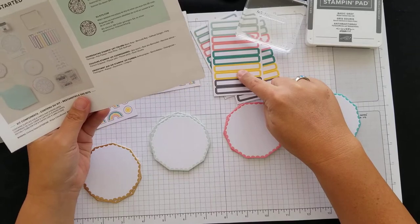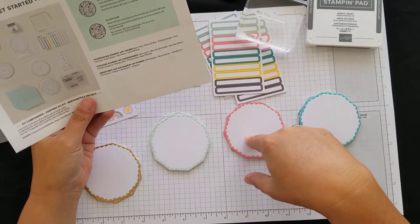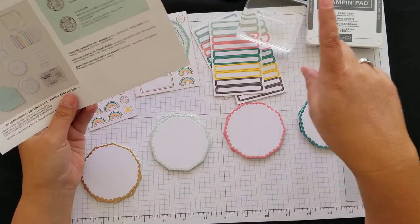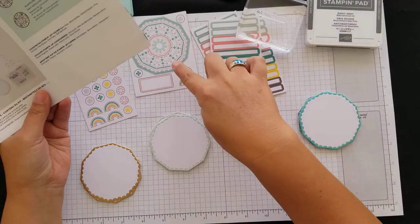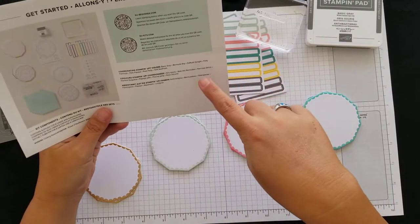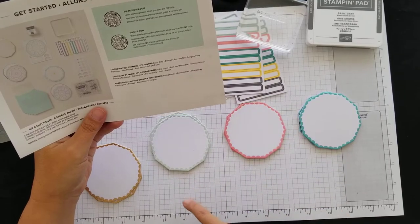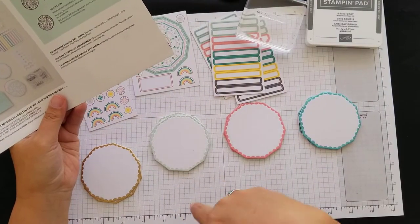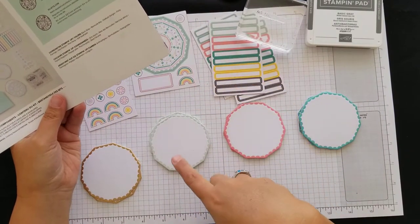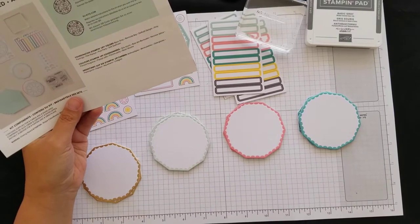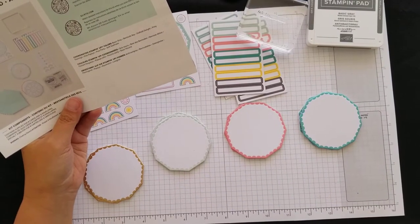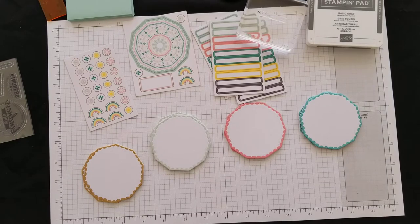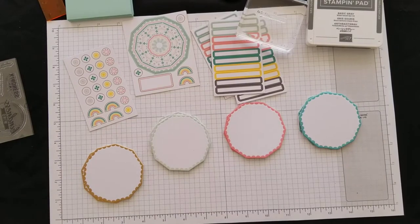Flirty Flamingo is the pink, Pale Papaya which I guess is the lighter color here, so Pale Papaya, Pool Party and Soft Seafoam. So Pool Party is the darker of the green and Soft Seafoam is the lighter, and then of course like a gold.